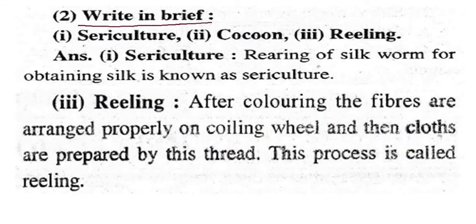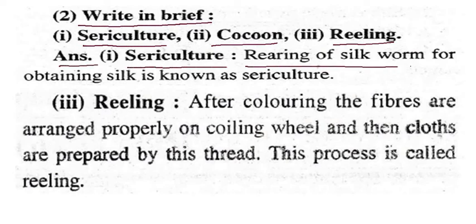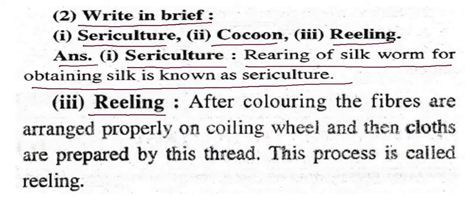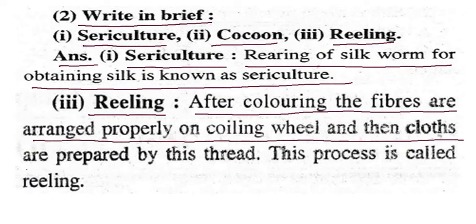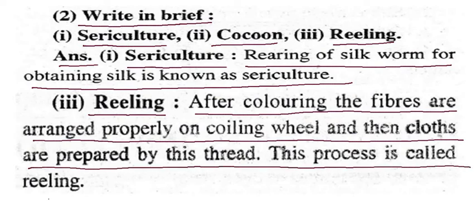First one is sericulture, second is cocoon, and third is reeling. Sericulture: the rearing of silkworms for obtaining silk is known as sericulture. Reeling: after coloring, fibers are arranged on a spinning wheel and thread is prepared. This process is called reeling.